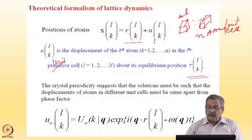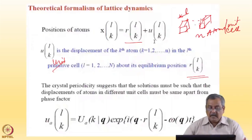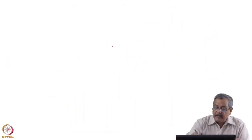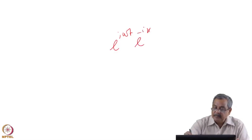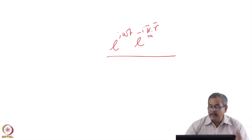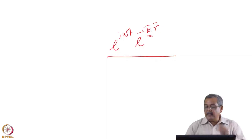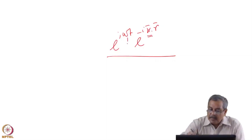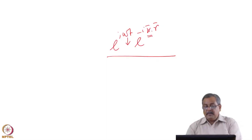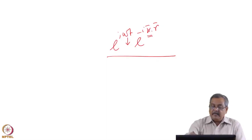Earlier also you saw that I took solutions which are wave-like, and here the writing is slightly different. A travelling wave solution is given by e to the power i·ω·t in time, and e to the power minus i·k·r in space. This k is the wavelength of the spatial variation, ω is the temporal variation, and this is the travelling wave solution.